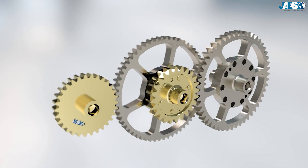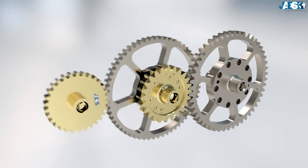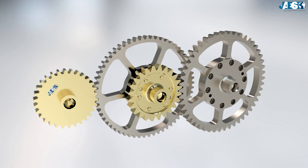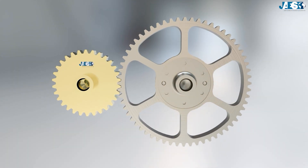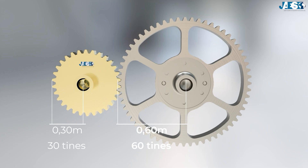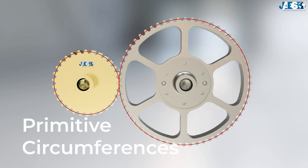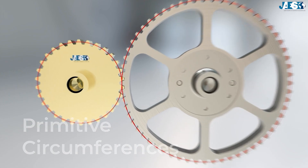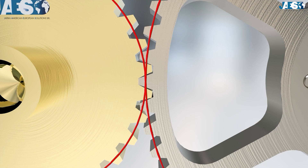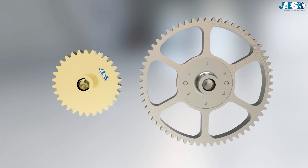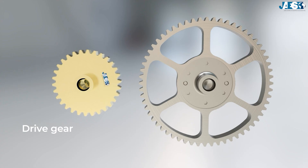Gear trains are a succession of gear wheels meshed together in which the rotation of one wheel causes the rotation of the others. Let's take as an example the simplest model, which are gear trains with two gears: one of 0.3 meters radius with 30 tines, and one of 0.6 meters radius with 60 tines. The number of tines in a gear is proportional to the diameter of its pitch circle. The primitive circumference of a pair of gear wheels are therefore tangent to each other and form a line of contact during meshing. The gear transmitting the motion is called the drive gear, while the gear receiving the motion is called the driven gear.